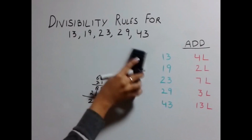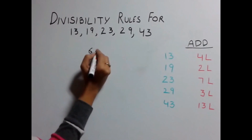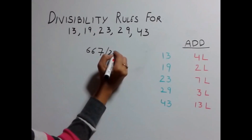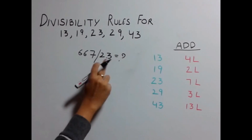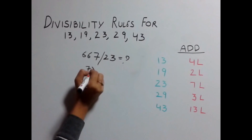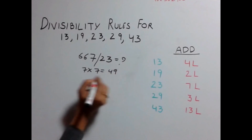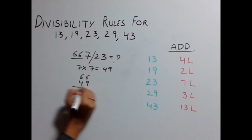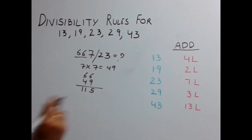Let's take another example. Take 667 again and check whether it is divisible by 23 or not. For 23, you need to multiply the last digit by 7. So 7 × 7 gives you 49. Adding this to the remaining number: 66 + 49 gives you 115.